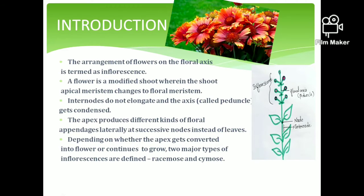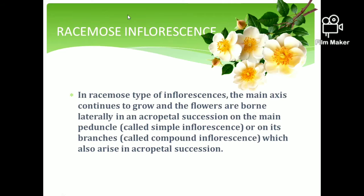Let's get started with racemose inflorescence. In this racemose type, the main axis continues to grow, and the lateral flowers are arranged in an acropetal manner. If the peduncle is single, it is called simple inflorescence. If the peduncle is branching, it is called compound inflorescence.